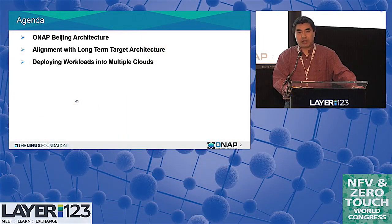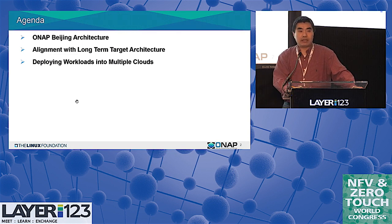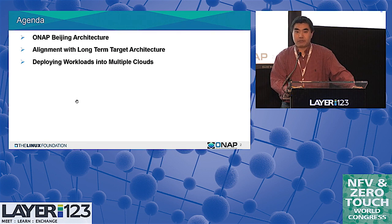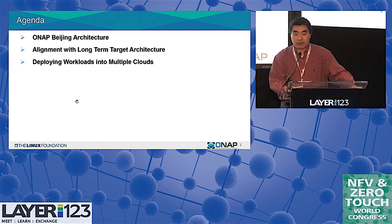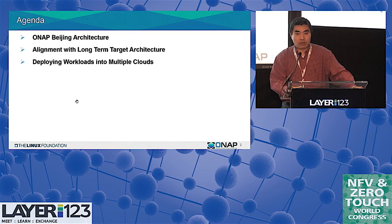Simply let me talk about three different areas. First is the ONAP Beijing Release Architecture and the overview of the different components, especially major components involved in the orchestration part. Second, how this architecture is aligned with the long-term target architecture and the principles we are taking. And last, the steps and how to orchestrate a workload or VNF into different types of clouds.